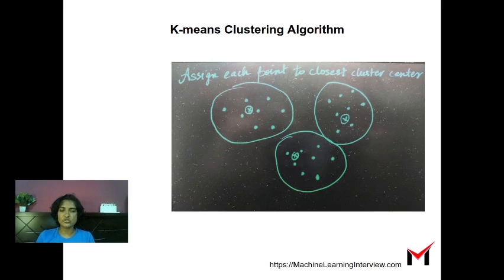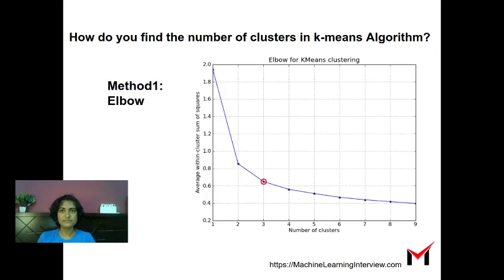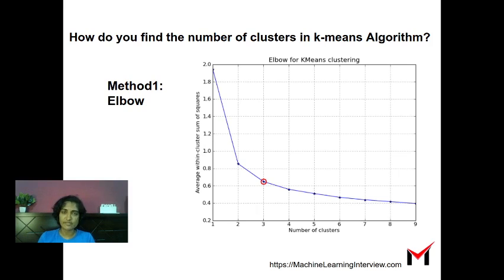This is the k-means algorithm, but how do you decide the number of clusters — how do you decide k? We will look at two methods today: the first is the elbow method and the second is the silhouette method, which are the most popular. The elbow method involves computing a metric which tells you how good the clustering is and plotting this value for different values of k.